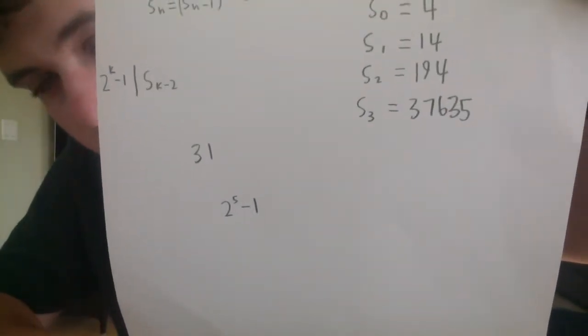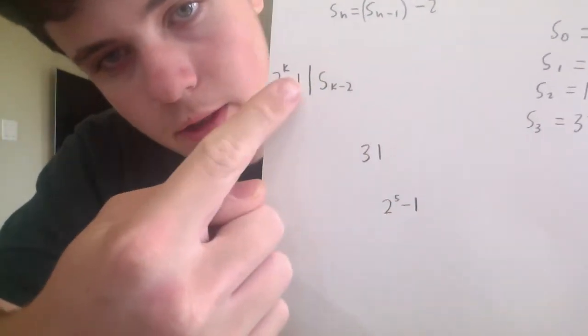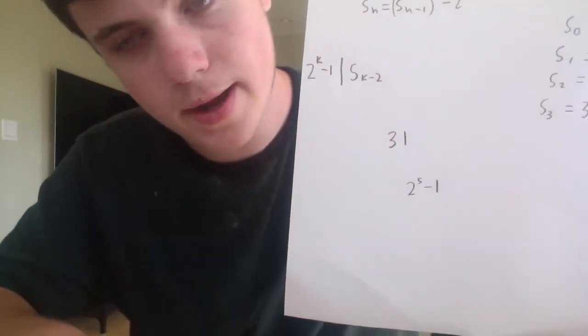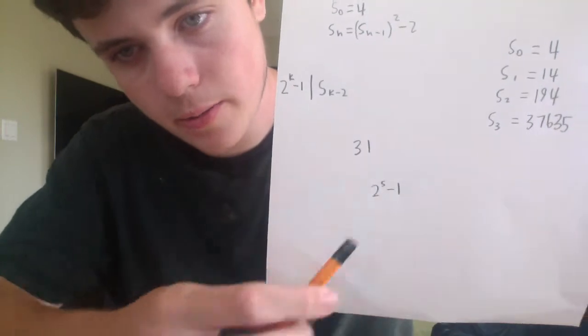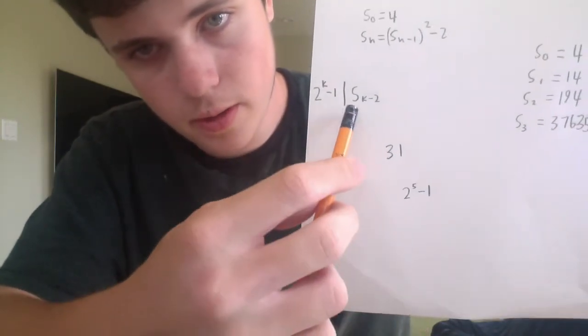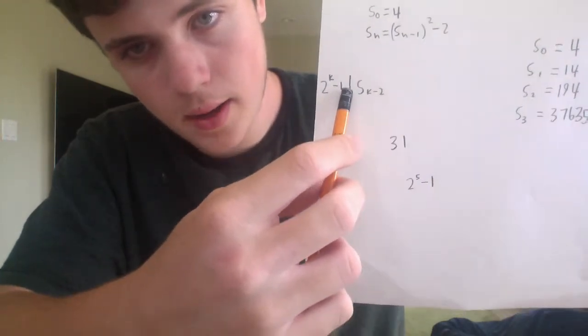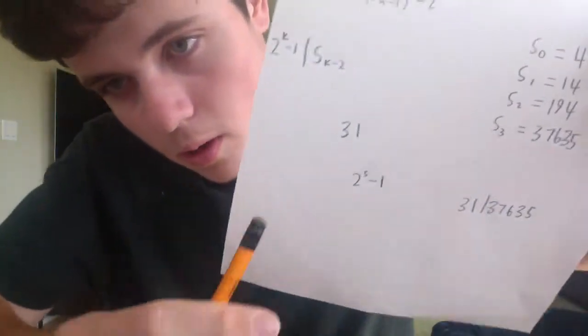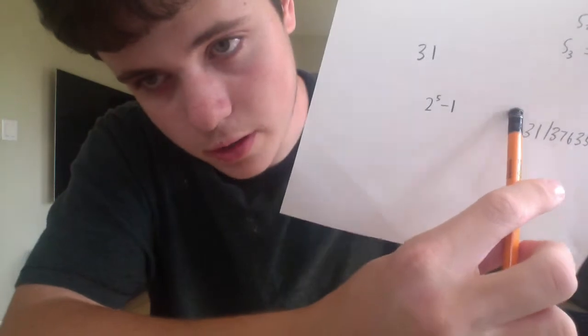This is S3 — I squared S2 and subtracted 2. So now we know what S3 is. The Lucas-Lehmer primality test says that this symbol here means 'divides,' so this is the same as saying 2^5 minus 1 divides S_{k-2}, and that is equivalent to 2^5 minus 1 being prime. So we want to figure out whether 2^5 minus 1 is prime. We're going to take 2^5 minus 1 and see if that divides S3. 2^5 minus 1 is 31, so we need to check: does 31 divide 37,635?